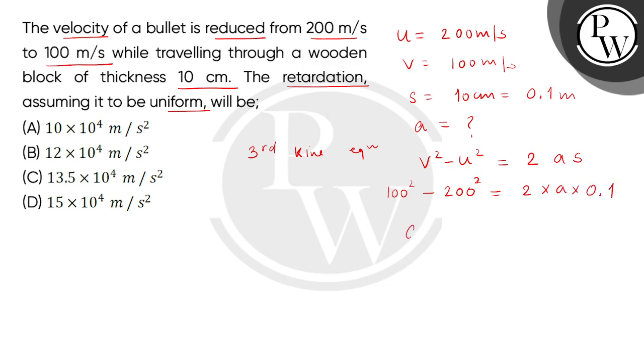We have a = (100² - 200²) / (2 × 0.1). We can take 100² common, so within bracket this is 1 - 4, divided by 0.2.